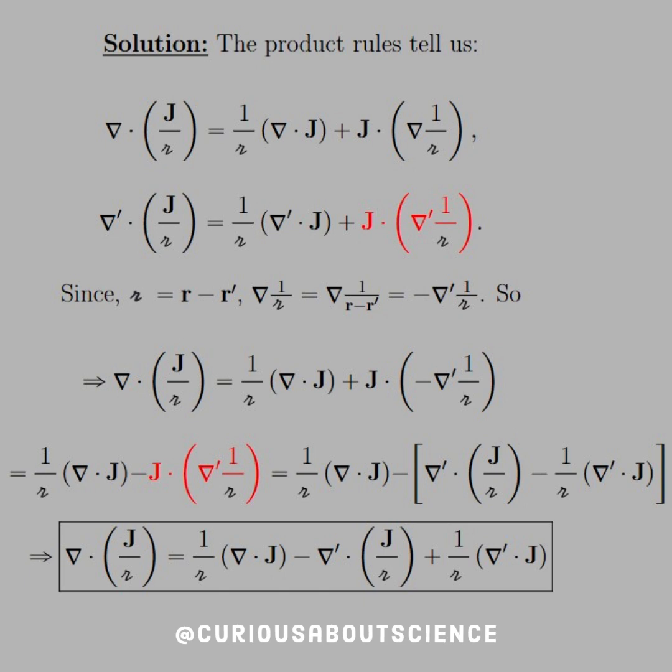Okay, so with that, we've got to be a little careful here, because the negative goes through. We see that we have negative J dot the gradient prime of 1 over script R, which is the red component of what we had in the second product rule. So now that we team them up with red and red, what we're going to do is solve the second product rule for the red part and substitute that in.